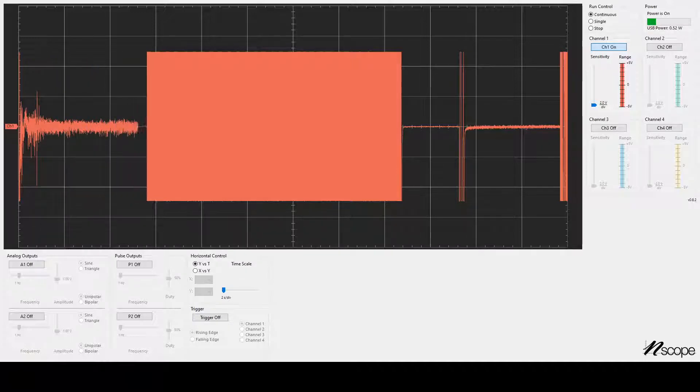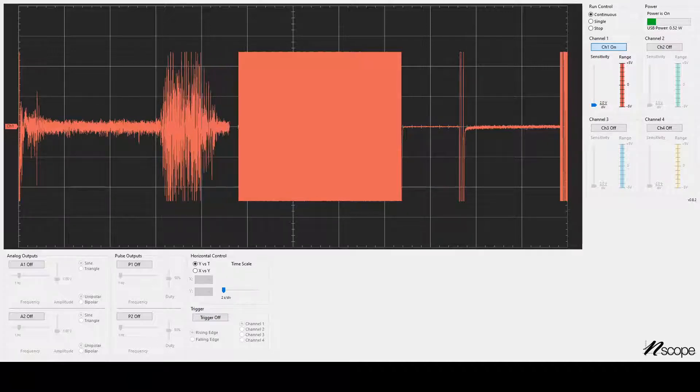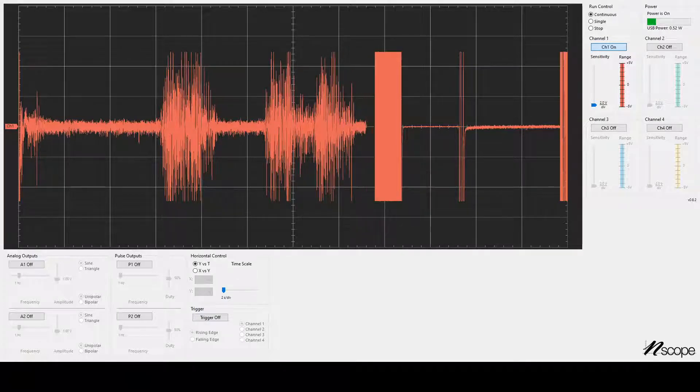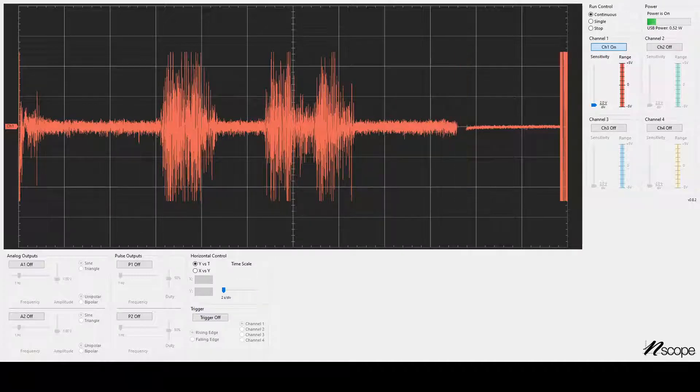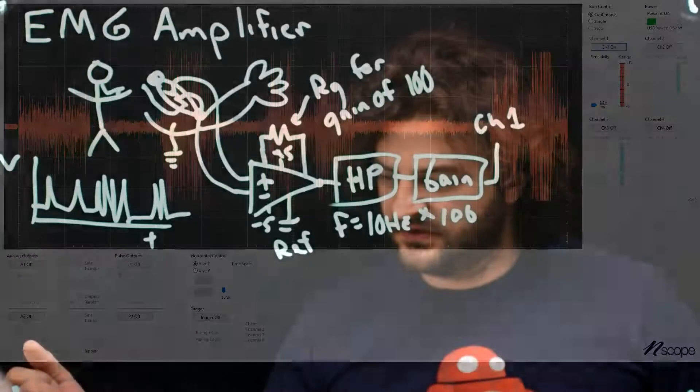So we see some kind of fuzzy signal. And if I flex, it gets bigger. And if I stop flexing, it goes back down again. So I flex, and I unflex, flex, and I unflex. What we see here is we essentially have a signal that's white noise. And the amplitude of the noise gets bigger as I flex, and the harder that I flex.